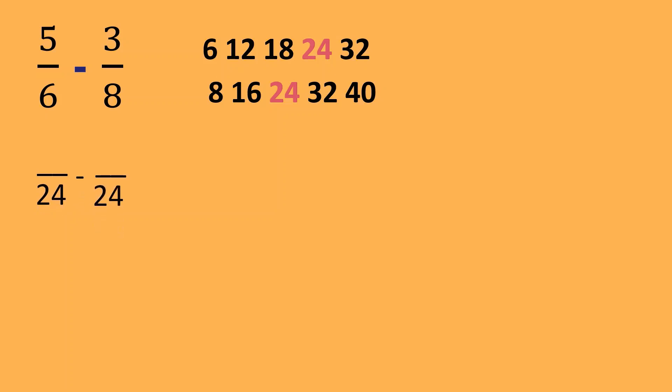We have another example. 5 over 6 minus 3 over 8. Again, let us try to look for the LCD. So, these are the multiples of 6 and 8. And upon listing the multiples of both 6 and 8, makikita natin na ang common sa kanila ay 24. So, yun ang ating gagawing bagong denominator. And then, 24 divided by 6 is equal to 4. 4 times 5 is equal to 20. 24 divided by 8 is equal to 3. 3 times 3 is equal to 9.